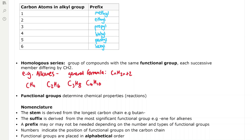When naming organic compounds we need to account for the number of carbon atoms in the alkyl group, which is just the carbon chain. If we have one atom the prefix is methyl, two is ethyl, three is propyl, four is butyl, five is pentyl, six is hexyl, seven is heptyl, and eight is octyl.